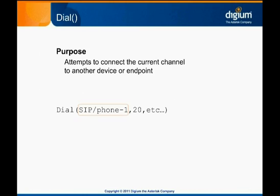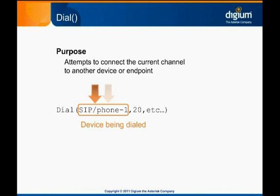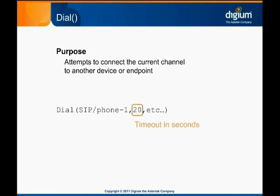The device being dialed is specified as the first parameter given to the dial application, with the channel technology listed first, then a slash, then the device name. An optional second parameter tells Asterisk how many seconds to try to dial. If the call is not answered in the specified timeout period, the dial application exits and dial plan execution continues at the next priority. If no timeout is specified, Asterisk will continue ringing the far end device indefinitely until the calling channel is hung up.